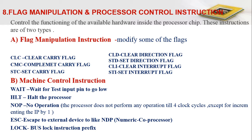Next is flag manipulation. We have different instructions for setting and resetting flags: CLC clears the carry flag to 0; CMC complements the carry flag, inverting whatever value is present; STC sets the carry flag to 1; CLD clears the direction flag to 0; STD sets the direction flag to 1; CLI clears the interrupt flag to 0; and STI sets the interrupt flag to 1. These are flag manipulation instructions used to set and reset specific flags.